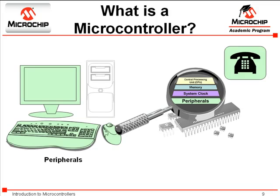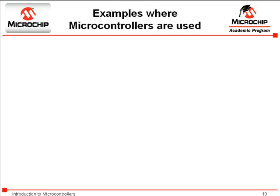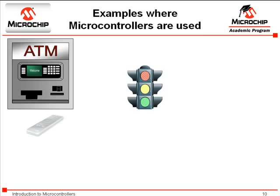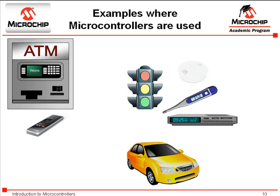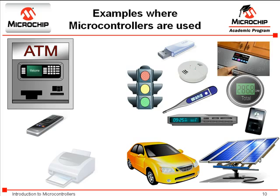Maybe for one application you need a microcontroller that can operate extremely fast, or maybe you have a lot of information to store on the device requiring higher memory densities. Another factor — perhaps the application requires a certain type of peripheral. All of these options are why companies such as Microchip offer a wide variety of products. With all these different options available, microcontrollers are therefore able to function in a wide variety of applications.